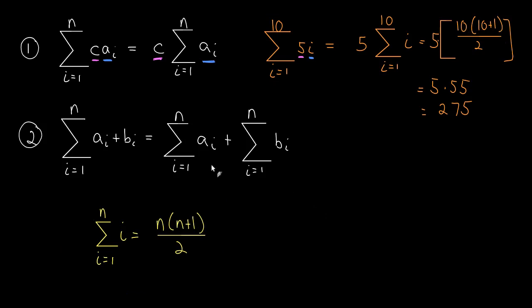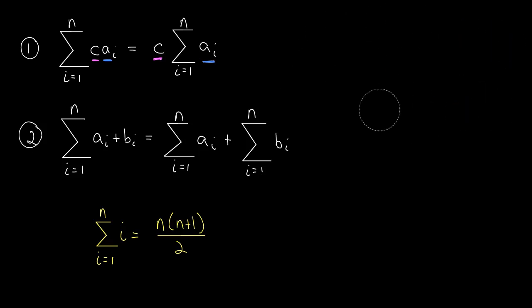That's an example for the first property. Let's go ahead and look at the second property. Here it says if we're adding up two different terms at the same time, instead we can just sum each term individually. Let's look at an example of that.